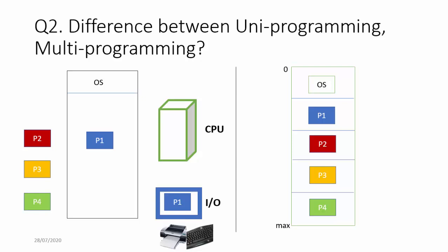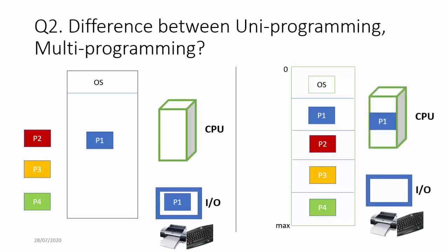In uniprogramming, one process will use the entire resources of the system until it is over. Whereas in multiprogramming, if P1 is using the CPU and at any point shifts to some I/O device, the moment the CPU becomes idle, another process from the available processes in the RAM is allocated to the CPU. Which process is allocated depends on the CPU scheduling criteria being used, but the advantage is that all your resources are being used at all times.